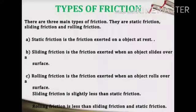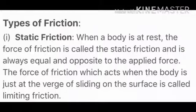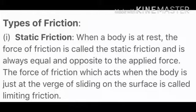If the applied force increases further, a stage is reached when the body just begins to move. At this stage the force of static friction is maximum. The maximum force of friction when a block is just starting to move is called the limiting value of static friction, or limiting friction. In other words, when a body is at rest, the force of friction is called static friction and is always equal and opposite to the applied force.